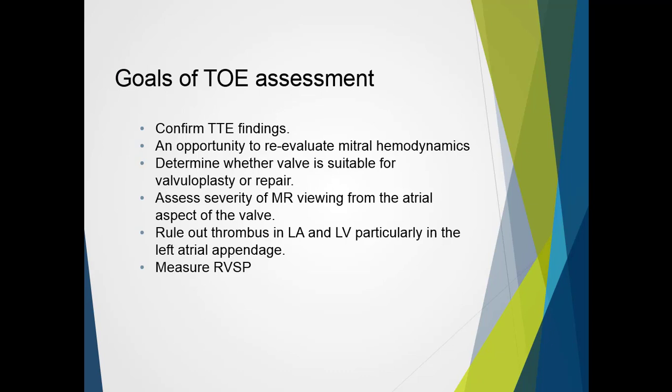Transesophageal echo is useful in confirming transthoracic findings, providing high-quality images of the valve. The study provides another opportunity to evaluate mitral valve hemodynamics to provide confident diagnostic information. Studies are often used to determine whether the valve is suitable for valvuloplasty or repair as alternatives to replacement. We can assess the severity of mitral regurgitation viewing from the atrial aspect of the valve, which is useful if there is significant calcification or prosthetic valves. This modality is best used to rule out thrombus in the left atrium and left atrial appendage — particularly in atrial fibrillation — as this is the standard view obtained before cardioversion, to avoid dislodging clot that could cause a stroke.